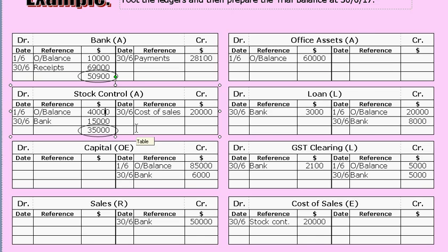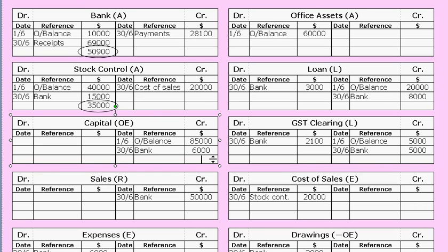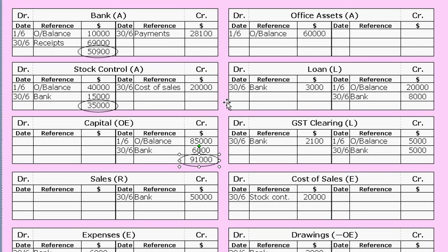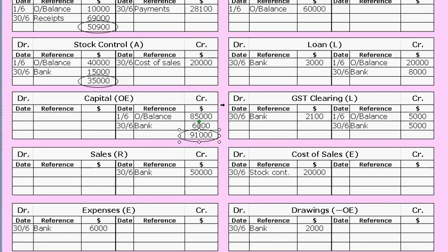For capital, there are only values on the credit side, so this is easy — you just add up those values, which is $91,000. Write that in pencil and put a little circle around it. That's the footed balance for capital, representing the value of the capital account at this point in time: $91,000.